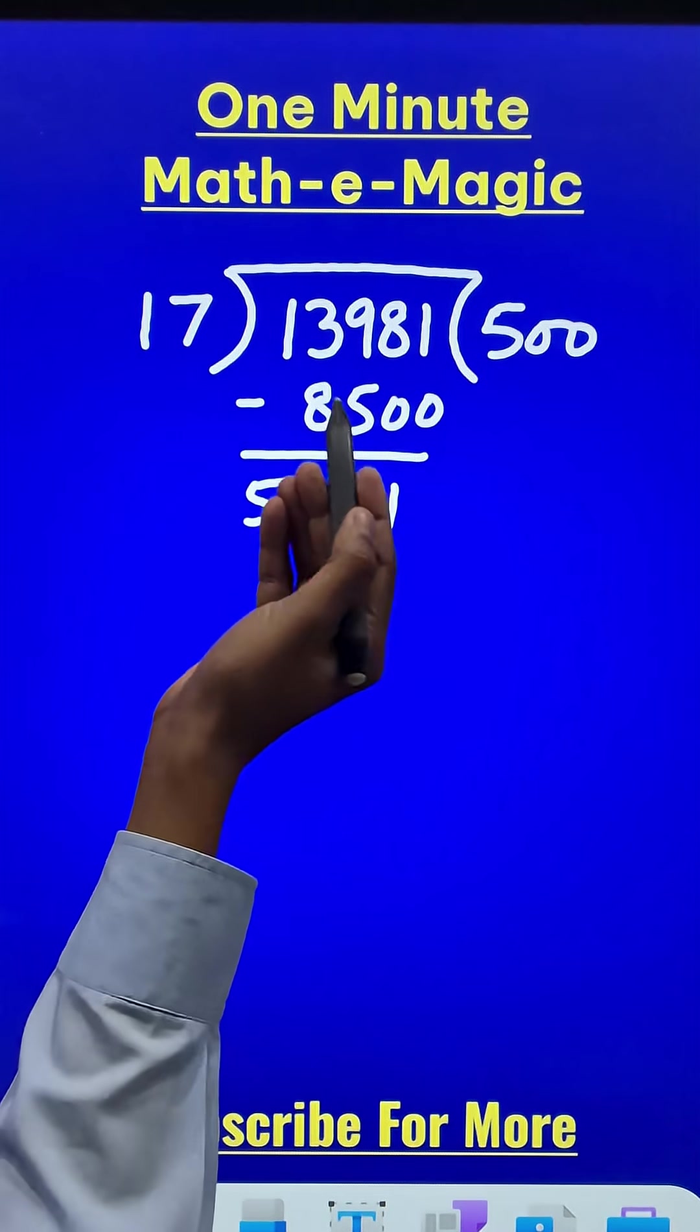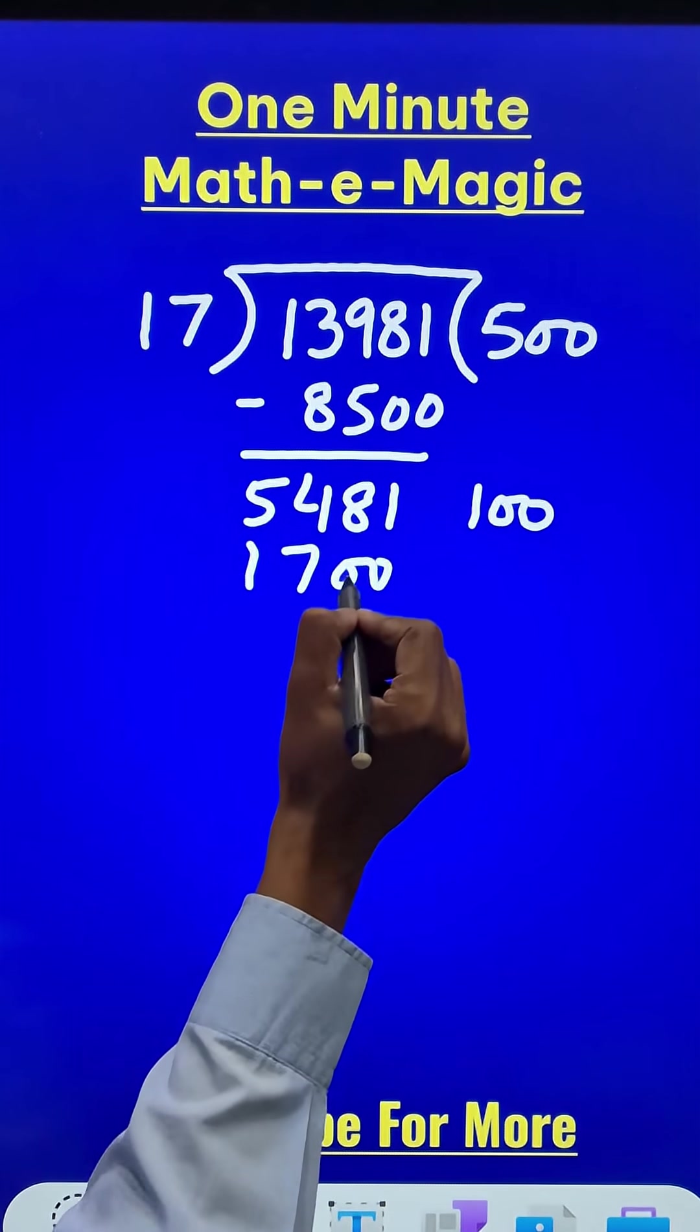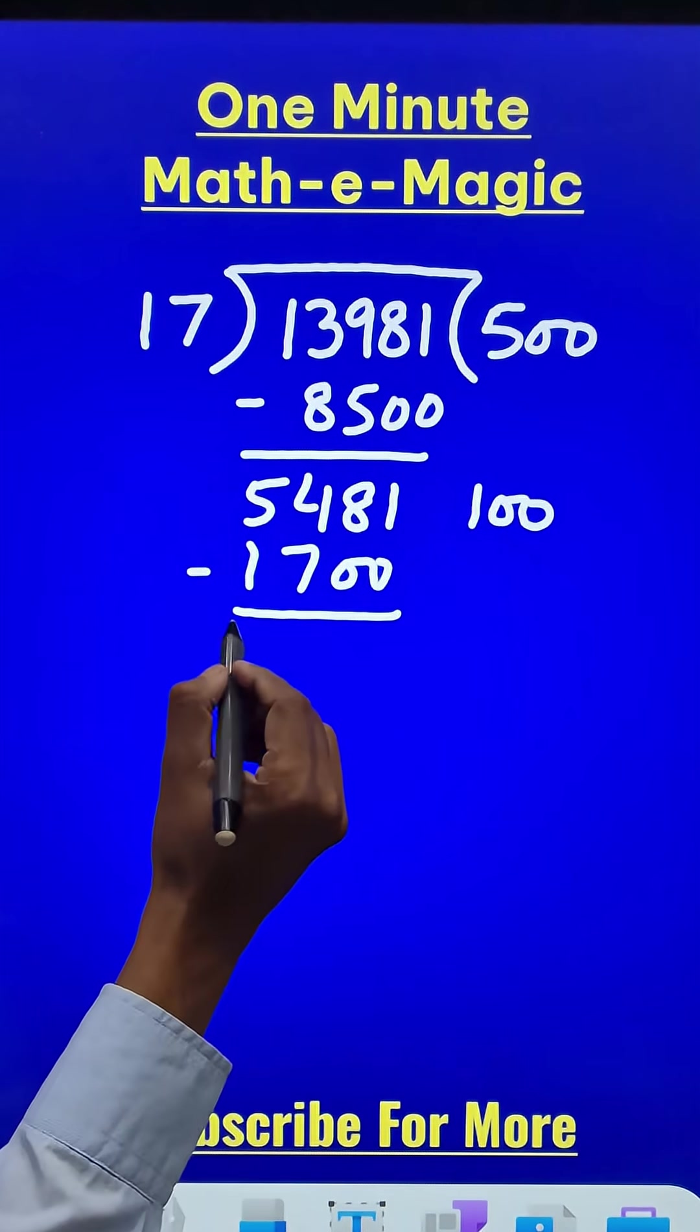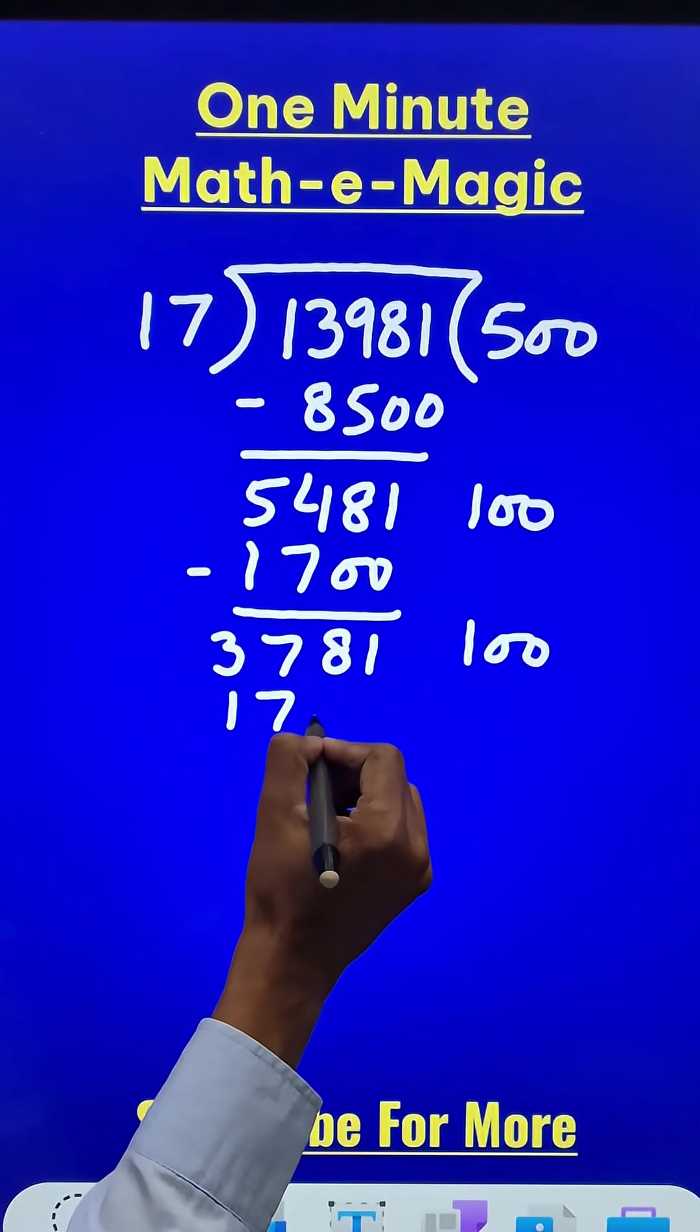Now we don't know the 17 times table. So 17 maybe 100 times is 1700. Can we keep on doing like this and subtracting? This will give you 3781, another hundred times, another 1700 subtract.